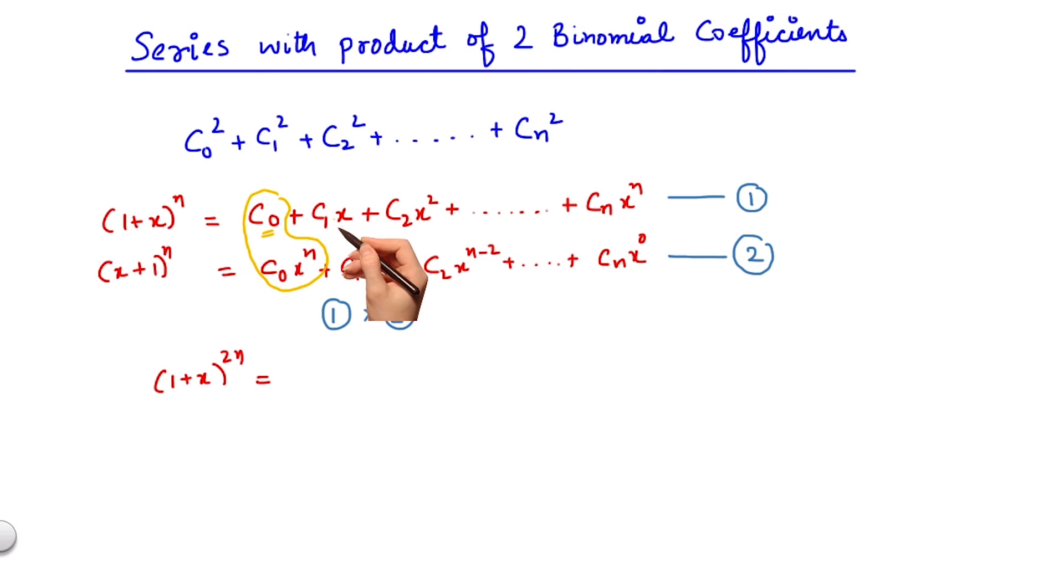Similarly, multiplying which term with c1x will give me x to the power n? If I multiply it with c0 x to the power n, I would get x to the power n plus 1, which is not desired. But if I multiply with c1 x to the power n minus 1, I would get x to the power n.